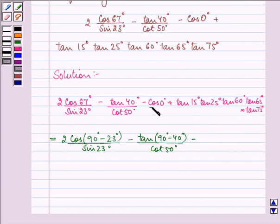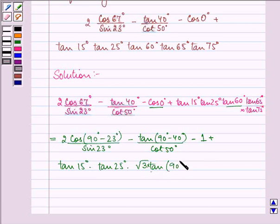minus 1, the value of cos 0° is 1, plus tan 15° into tan 25° into root 3, which is the value of tan 60°. Now tan 65° can be written as tan(90° - 25°) and similarly tan 75° can be written as tan(90° - 15°), right?